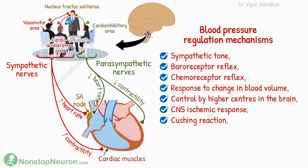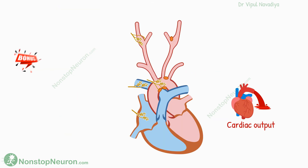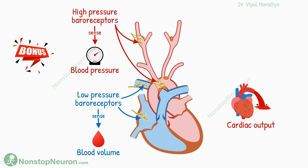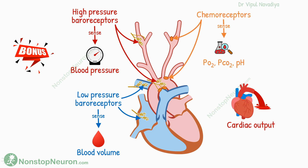That's it for control of cardiac output. For sticking with me until the end, here is an interesting bonus point. We have baroreceptors that can sense blood pressure and blood volume, and chemoreceptors that can sense concentration of oxygen, carbon dioxide, etc. in the blood. But we don't have any sensor that directly measures cardiac output. So fundamentally, what the body is actually trying to correct is these parameters. Cardiac output is an indirect determinant of these parameters, so it's affected indirectly as the body tries to correct them.